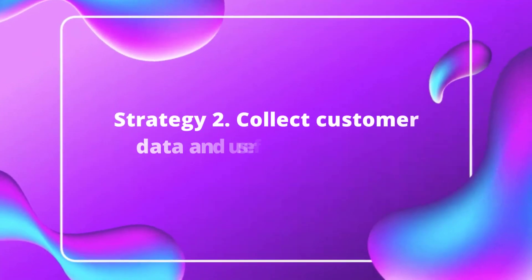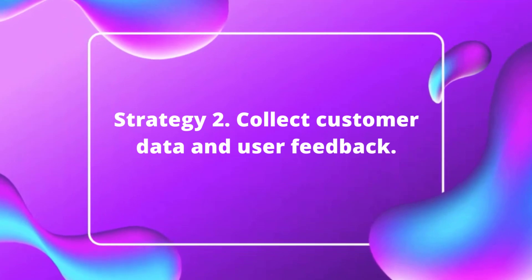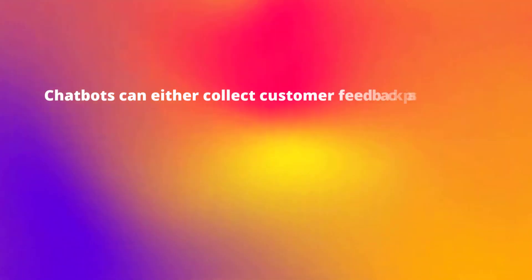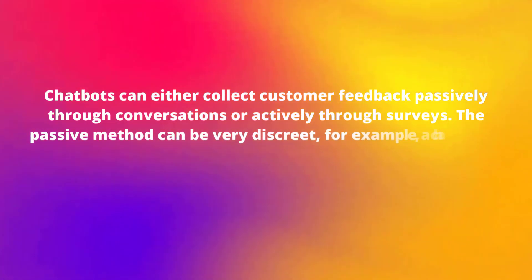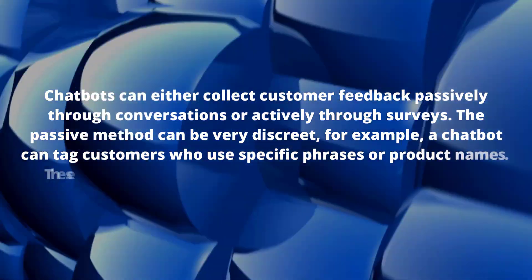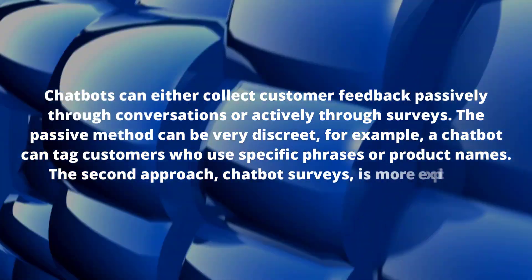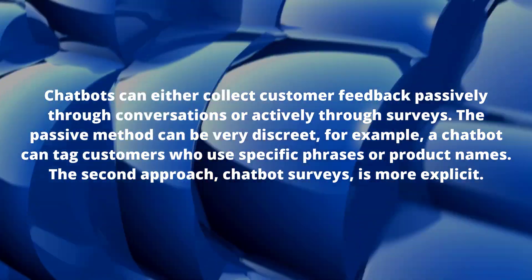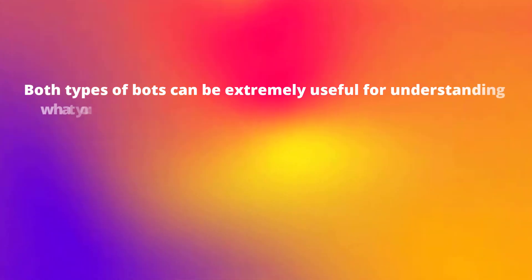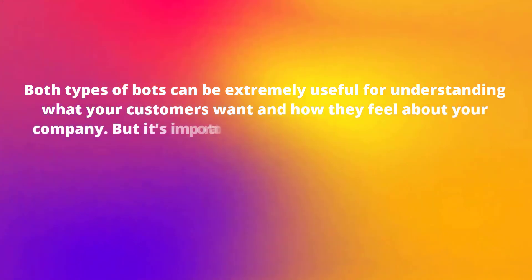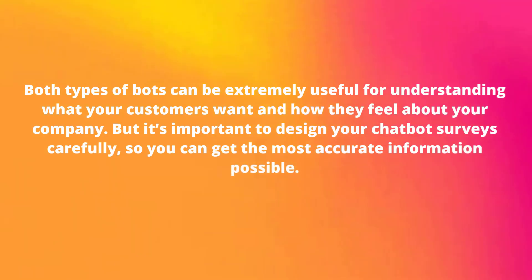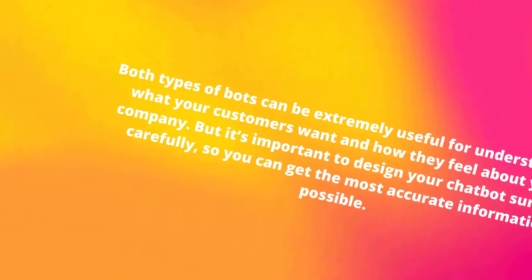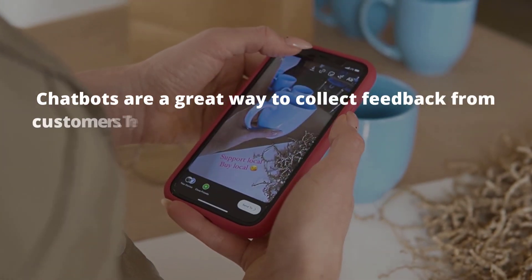Strategy number two: collect customer data and user feedback. Chatbots can collect customer feedback either passively through conversations or actively through surveys. The passive method can be very discreet — for example, a chatbot can tag customers who use specific phrases or product names. Chatbot surveys are more explicit. Both types can be extremely useful for understanding what your customers want, but it's important to design surveys carefully for accurate information.